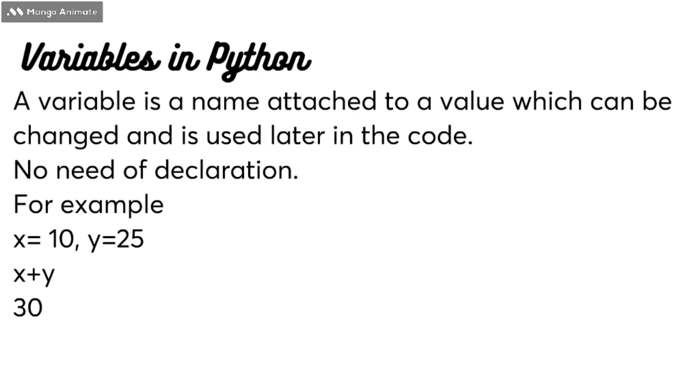Python variable is a name attached to a value which can be changed and is used later in the code, no need of declaration. Python has no need to declare the variable. For example, x equals 10 and y equals 25, x plus y equals 30. We have no data type to specify.